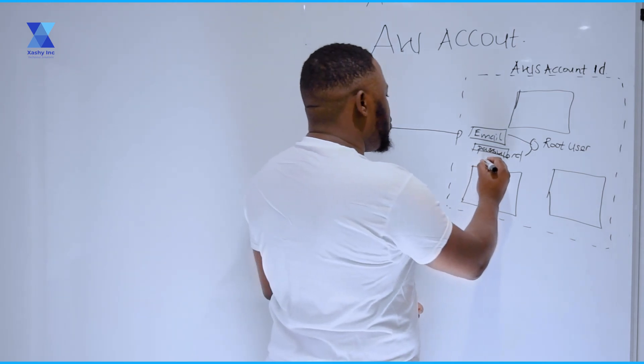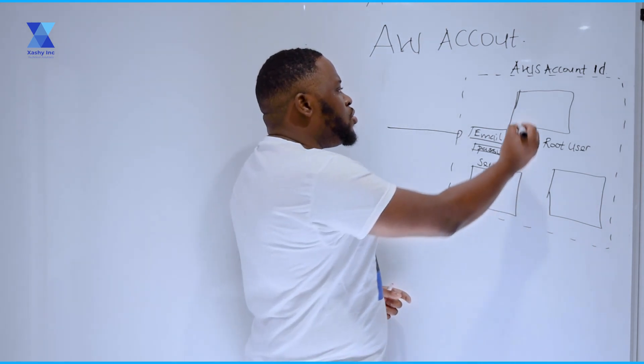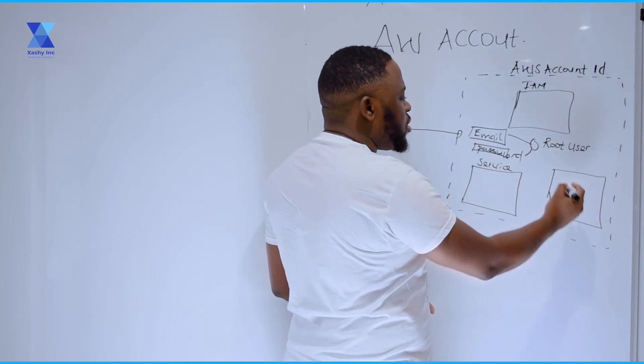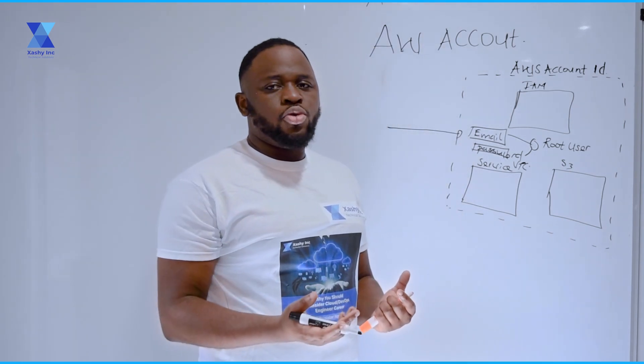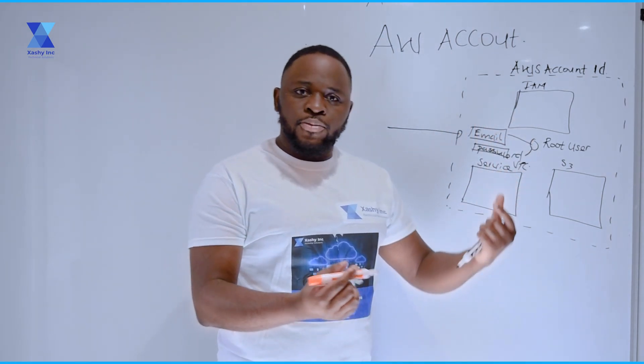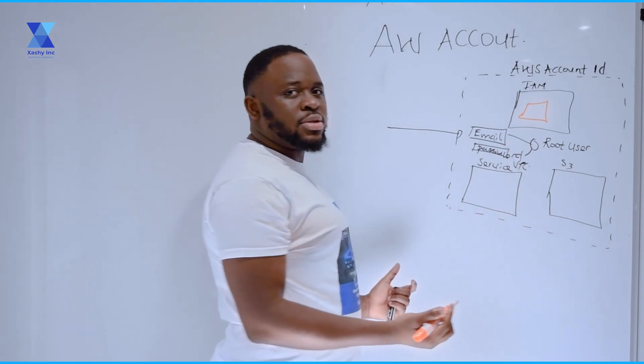As you move through the course, you're going to make use of AWS services. In your AWS account, you're going to access services like IAM and EC2. An AWS service is nothing but an application created by AWS, and that application is used by customers to host their resources or their applications. Anything you create out of an AWS service is actually going to be called a resource — that thing you create from an AWS service.